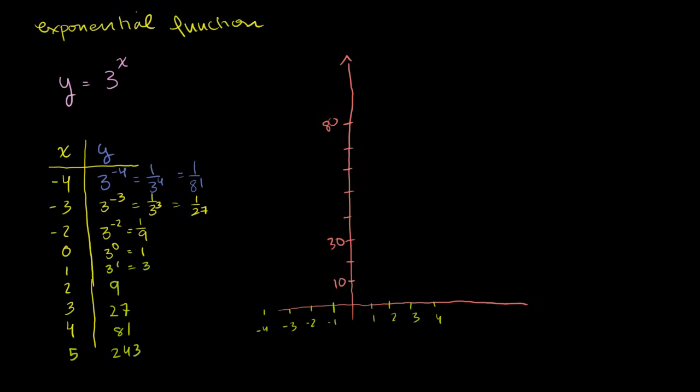So when x is equal to 0, we're equal to 1. When x is equal to 1, y is equal to 3, which is maybe right around there. When x is equal to 2, y is equal to 9, which is right around there. When x is equal to 3, y is equal to 27, which is right around there. When x is equal to 4, y is equal to 81.